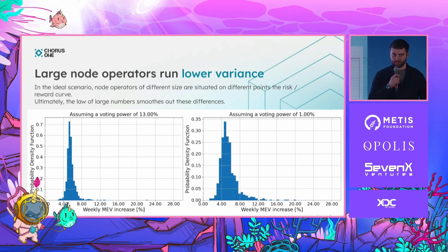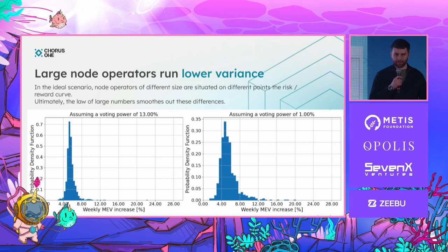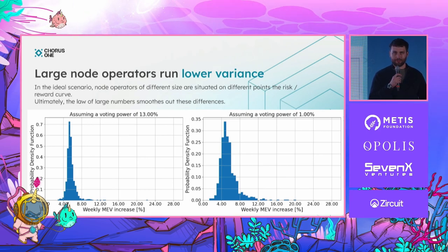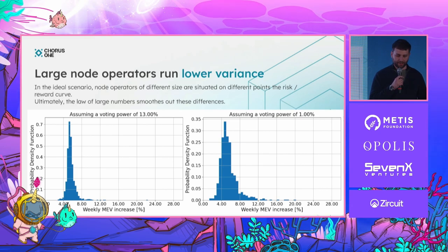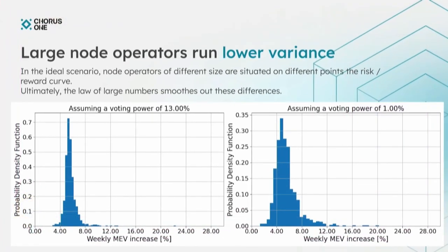This could reflect differently depending on your size as a node operator. If you're large — say 13% of voting power — the volatility inherent to MEV would smooth out, and you'd have a pretty good idea of what you could earn by playing timing games. Whereas if you're a small validator, MEV rewards are very volatile, putting you at a different point on the risk-reward curve. Your rewards would vary a lot more. The law of large numbers means that if you run many validators or run them for a long time, you'd approximately converge to the same result in expectation.